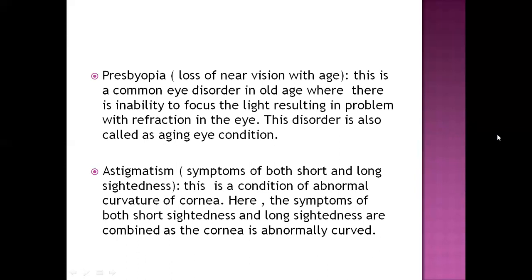Next is astigmatism. In astigmatism, there is abnormal curvature of the cornea — that means the cornea is abnormally curved. Because of this abnormal curvature, there are symptoms of both short-sightedness and long-sightedness, because light is focused both in front of the retina and also at the back of the retina.